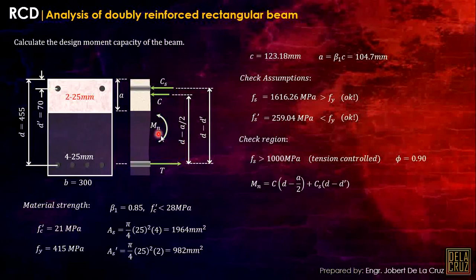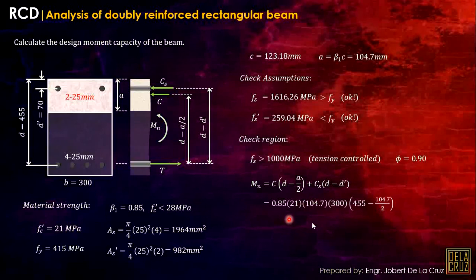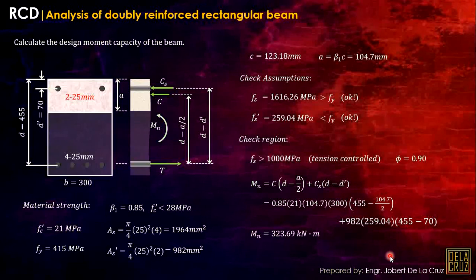Now calculate the nominal moment capacity by summing moments about the line of action of the tension. Mn = C × (D − a/2) + Cs × (D − D'). Substitute the values — for As' × Fs', we use the actual stress Fs' since it did not reach Fy. From that we get the value of Mn. Then the design moment φMn = 0.9 × Mn, and that is our answer.